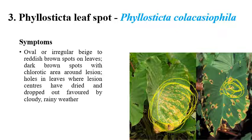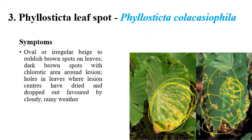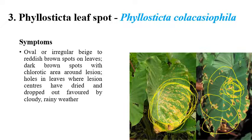In later stages, the green leaf color slowly converts to yellow. Drying of leaves and shot holes can also be observed. This disease is mainly favored by cloudy and rainy weather. In the rainy season, there is a higher chance of infection, as the leaves are more susceptible under cloudy or rainy conditions, increasing the chance of Phyllosticta leaf spot infection.